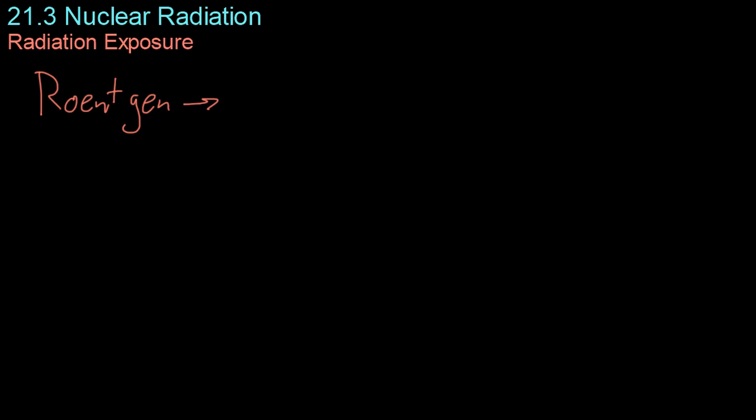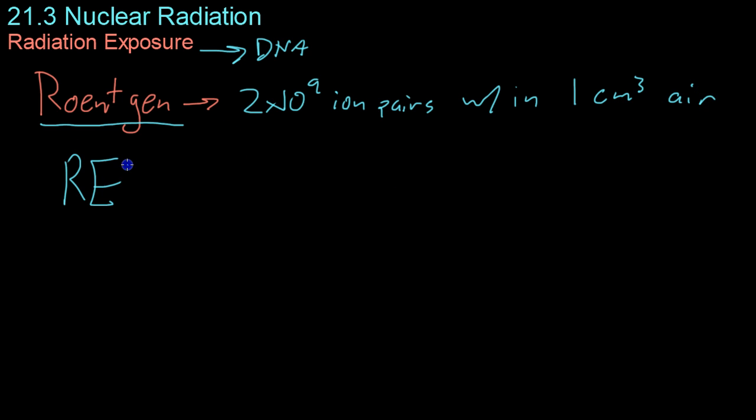Moving on now to radiation exposure. Radiation can be damaging to human cells, mostly because they can get in and knock out chunks of your DNA, which can then cause cancer and whatnot. But, in order to measure how much of an effect a certain amount of radiation is having, you have to determine how much radiation you're getting. And we measure that usually with the roentgen, which is the radiation equivalent of ionizing 2 times 10 to the 9 ion pairs, basically, from neutral air, within 1 cubic centimeter of air. And we usually measure this in REM, which is the roentgen equivalent for man, or mankind.